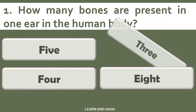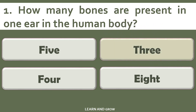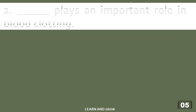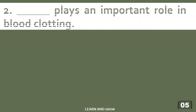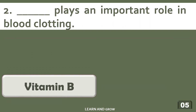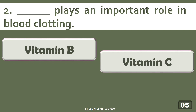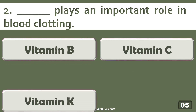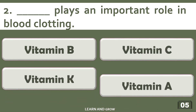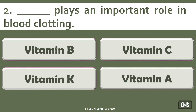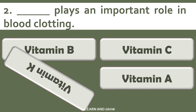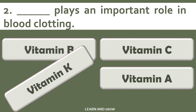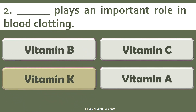The right answer is three. Which vitamin plays an important role in blood clotting? Options are: A) Vitamin B, B) Vitamin C, C) Vitamin K, or D) Vitamin A. The right answer is option C, Vitamin K.